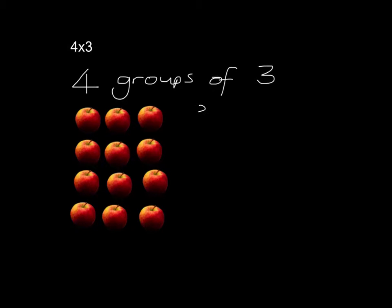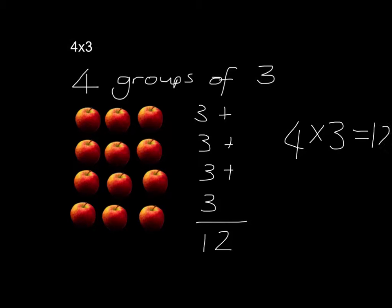Well, we've got 3, plus another 3, plus another 3, plus another 3, which gives us a total of 12 apples. In other words, 4 groups of 3 apples is equal to 12.